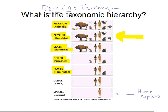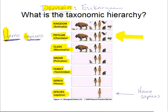Within order Primates, we fit into a family called Hominidae, and within that family into a genus called Homo. We are the one species in that genus called sapiens — so our name is Homo sapiens. When writing scientific nomenclature, the genus name is always capitalized — 'Homo' — and the species name is always lowercase — 'sapiens.' The key taxonomic hierarchy to know is: domain, kingdom, phylum, class, order, family, genus, species. As you go down the list, groups get smaller until you reach a single species.